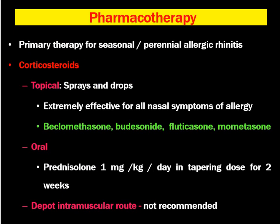Next is pharmacotherapy, which is the primary therapy for seasonal or perennial allergic rhinitis, whether the patient has mild or severe symptoms. Corticosteroids are the mainstay of treatment in allergic rhinitis for mild to moderate symptoms. Topical corticosteroids come in sprays and drops and are extremely effective for all nasal symptoms of allergy, including sneezing, itching, nasal discharge, and nasal obstruction.